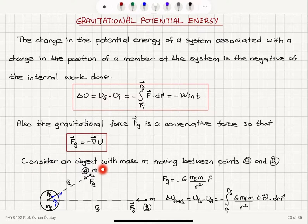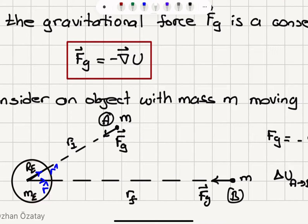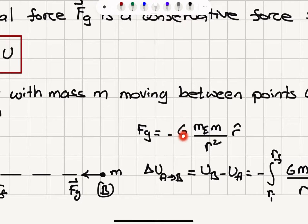Now let's consider an object with mass m moving between points A and B. Here is the Earth — mass of the Earth, radius of the Earth — and this object with mass m is at a distance r initial with respect to the center of the Earth. We have the r-hat vector pointing from the Earth towards the object. This object moves from position r1 to position r final, which is at point B. The gravitational force is a central force pointing towards the center of the Earth because it's attractive, so the gravitational force is minus G times mass of the Earth times mass of the object divided by r squared, in the r-hat direction.